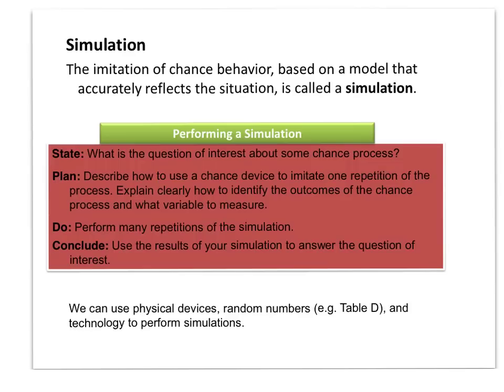Every time I saw the word make, it would simulate him making a free throw. And every time I saw the word miss, that would represent him missing a free throw. And then we're going to perform many repetitions. We're going to keep pulling papers out of a hat until we've done this many, many times. And we'll use our results to actually answer the question. We can use physical devices, like slips of paper in a hat. We can use random numbers, like table D in the back of your book. Or we can use technology, using our calculators, using the random integer feature.